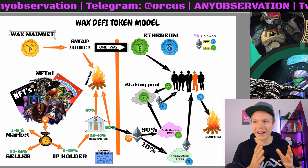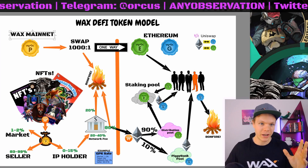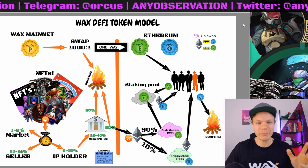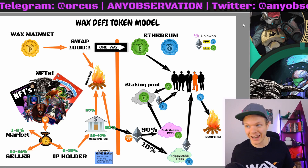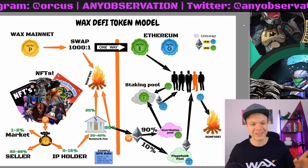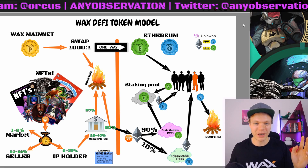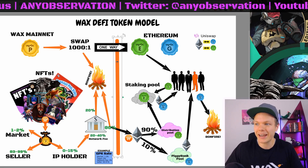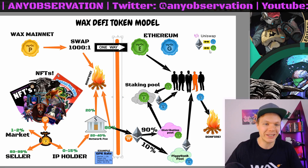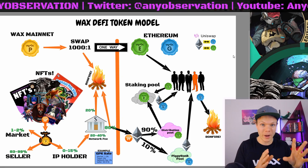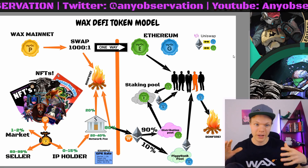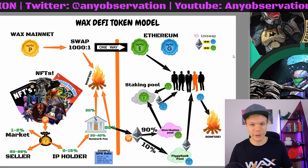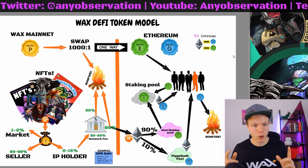This is the WAX DeFi model. I have tried to describe this as clearly as I can and I will go through all these details. There are a lot of images and arrows. First thing to see is this line here — this is actually what's dividing the WAX chain from the Ethereum chain. So this DeFi model is using two different blockchains.